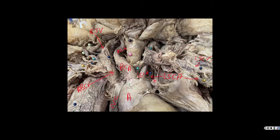Subclavian means below, beneath the clavicle. The clavicle — the collarbone — was here; it has been removed before we took these pictures. Same thing over on the right side. So those are all the arteries that we're concerned with in this image.